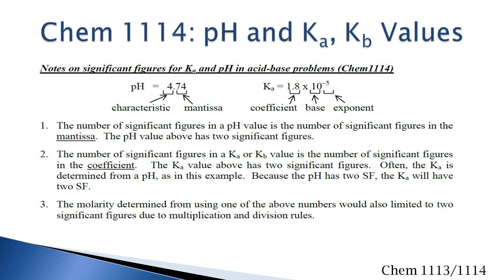In CHEM 1114, pH and Ka and Kb values will also have significant figures. For pH, the number of significant figures is the number of digits in the mantissa, which is to the right of the decimal point. This pH has two significant figures. When calculating a Ka or Kb value from a pH, since the pH had two significant figures, your Ka will also have two significant figures. If you're determining a molarity from one of these, your molarity would also have two significant figures. So, in a nutshell, those are significant figures for CHEM 1113 and 1114.